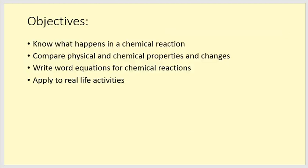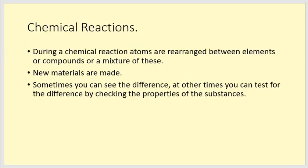So, we have got four objectives today. We're going to have to know what happens in a chemical reaction. We are going to be comparing physical and chemical changes. We're going to be writing word equations for chemical reactions and we'll be applying this to real-life activities and situations. Now, if you want to write these objectives down, you can do. In which case, you'll need to pause the video.